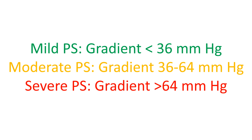Mild pulmonary stenosis has a peak velocity less than 3 m/s and peak gradient less than 36 mmHg. However, this grading does not mention the minimum gradient required for the diagnosis of mild pulmonary stenosis.